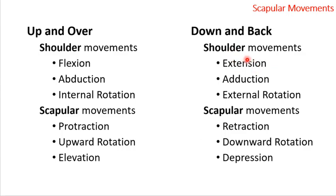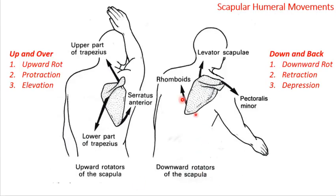The opposite is true when doing extension or adduction — reaching behind you or pushing your arm into your side. If you bend your elbow 90 degrees and internally rotate as far as you can, you'll notice your shoulder blade comes forward and up — a little protraction and elevation. Doing external rotation, you'll feel your scapula come down, back, and in — retraction, downward rotation, and depression. The arm going up to the side in flexion, abduction, or horizontal adduction all have the scapula coming up and over the ribcage, and when the arm comes down and back, it does downward rotation.